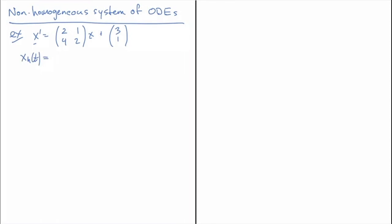Let's write down what we got for the homogeneous solution X_H: that is C1 times (1, -2) plus C2 e^(4t) times (1, 2). Important to notice is that the range of this matrix — in other words the set of vectors that the columns can add up to — is actually in the same direction as the eigenvector for the non-zero eigenvalue.